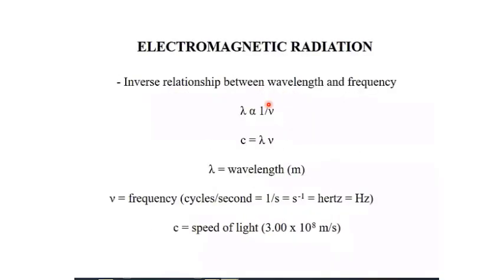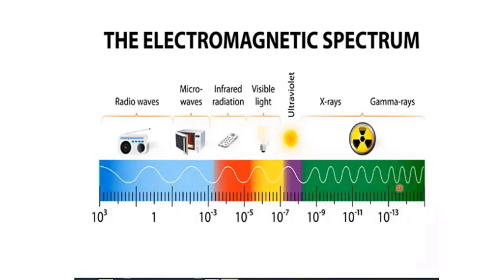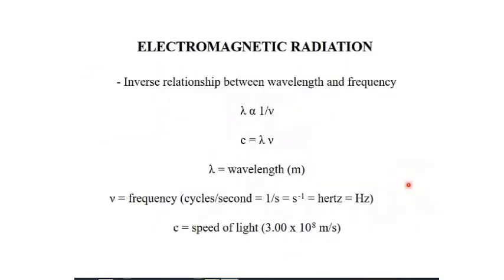In the gamma rays region, the wavelength is very small compared to radio waves, while the frequency is very high. You can see that the distance between two crests and two troughs is very small for gamma rays compared to radio waves. If you fix a point and count the waves passing through it, gamma rays produce a very high count while radio waves produce a very low count. This confirms that gamma rays have higher frequency and lower wavelength.